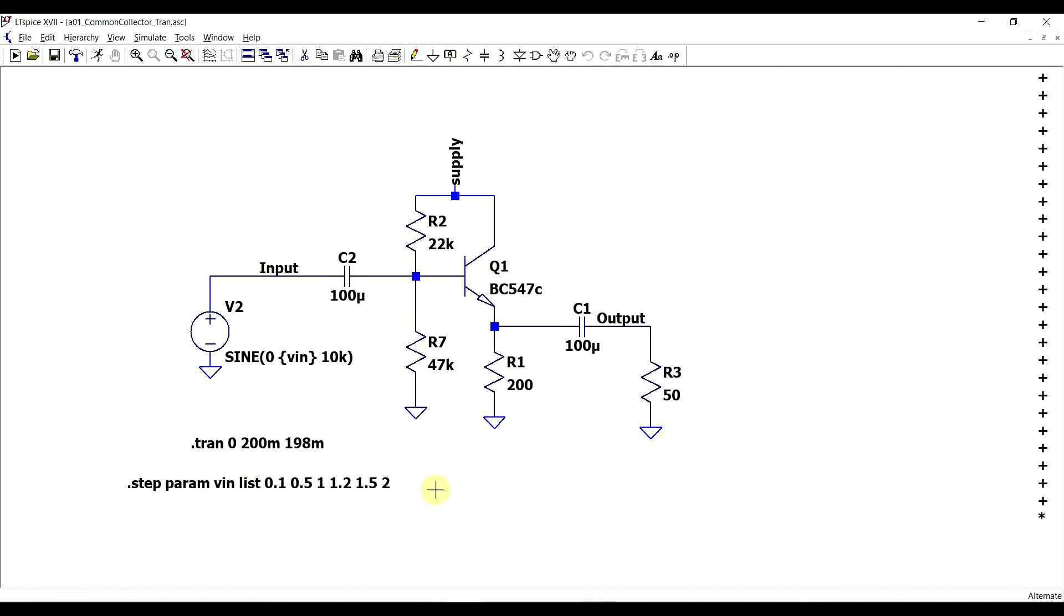Now just to see how well the amplifier handles the input signals, I set multiple amplitude values for the input signal. The frequency is static at 10 kilohertz, but the amplitude goes from 0.1 volts up to 2 volts.